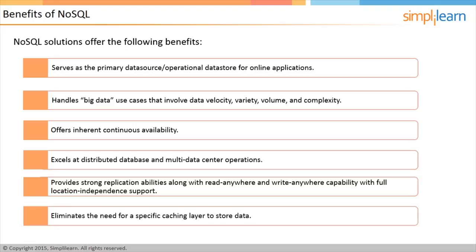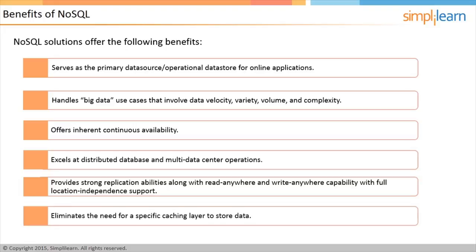No Need for a Separate Caching Layer: A good NoSQL solution uses multiple nodes and distributes data among all participating nodes, so it does not require a specific caching layer. The memory caches of all participating nodes can store data for quick I/O access. NoSQL eliminates the problem of synchronizing cache data with the persistent database, supporting simple scalability with fewer management issues.